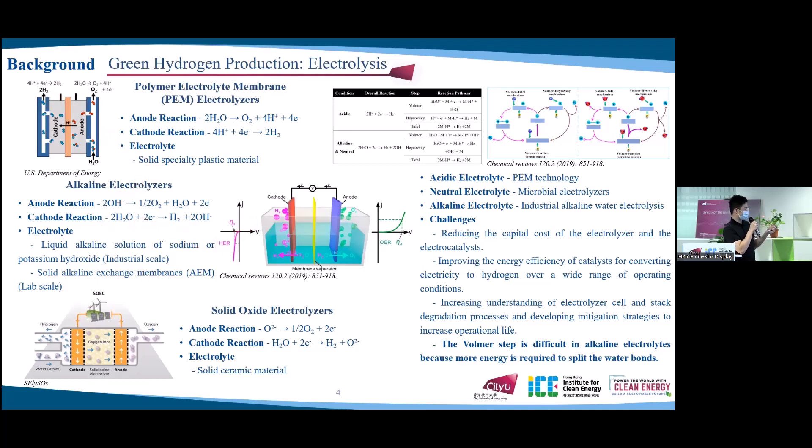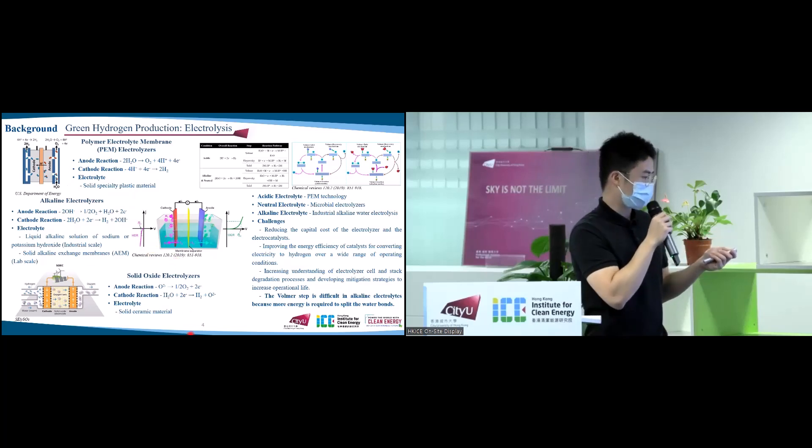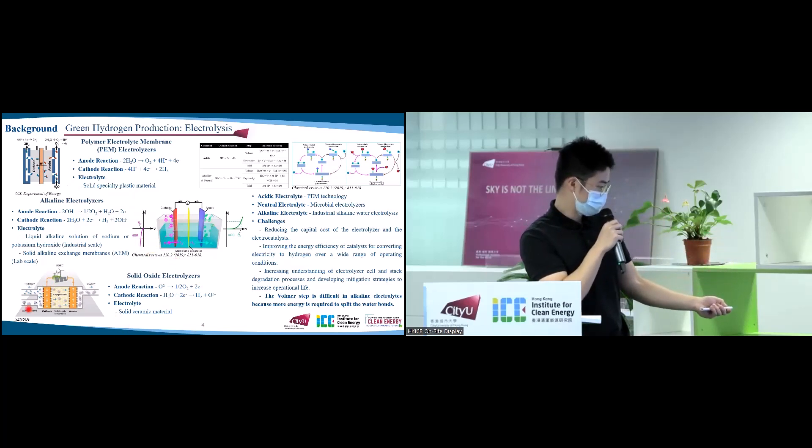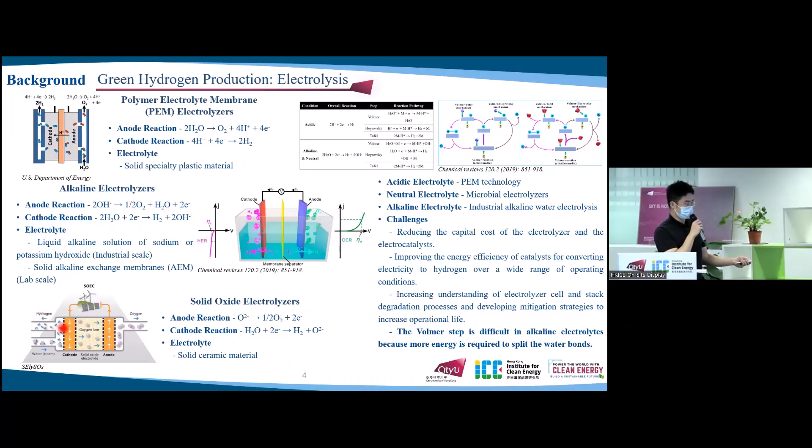The alkaline electrolyzers operate via hydroxide ions transport through the electrolyte from the cathode to the anode, with hydrogen being generated on the cathode side. For the solid oxide electrolyzers, steam reacts at the cathode to combine with electrons from the external circuit to form hydrogen gas and negatively charged oxygen ions. The oxygen ions pass through the solid ceramic membrane to the anode and react to form oxygen gas and electrons for the external circuit.